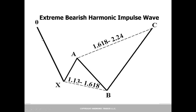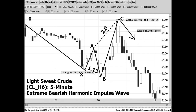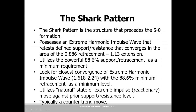In the bearish version, same type of deal: we have an extended move down, then the XAB — look at that B point, it can't take out the 1.13 — and then it gives you a really fast reaction. These impulse reactions off of that move are some of the best reactive setups, especially right above the 1.618.